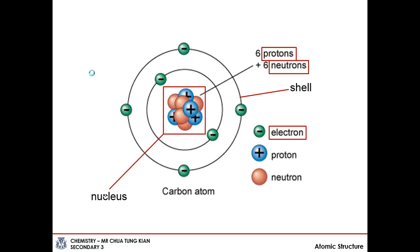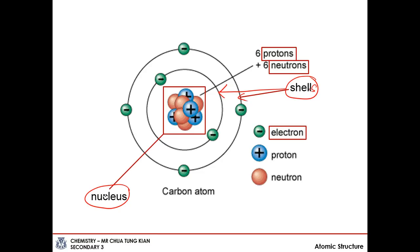Most of you would have seen this diagram of an atom before. You will notice that it is actually made up of a few parts. The two main parts are the nucleus and the electron shells — there are two shells here. The nucleus, as the name sounds, is the central portion. It contains the protons and the neutrons. In carbon's case, there are six protons and six neutrons.